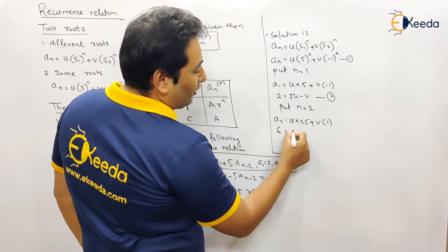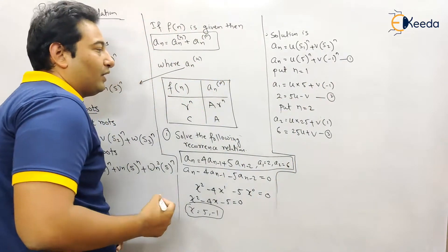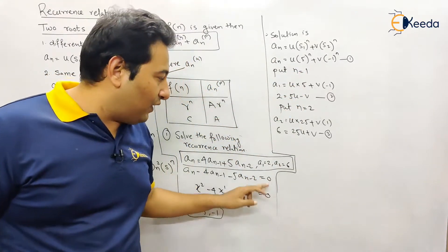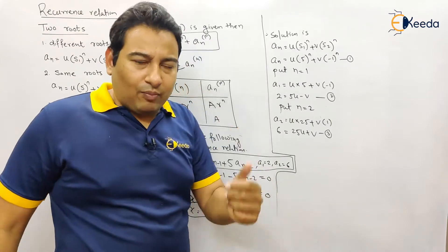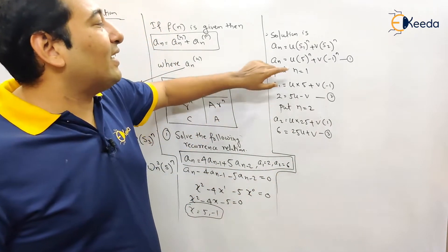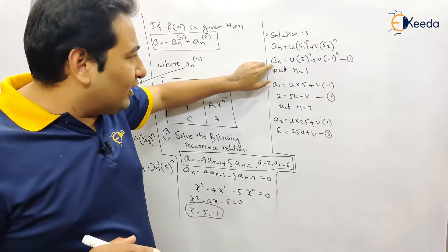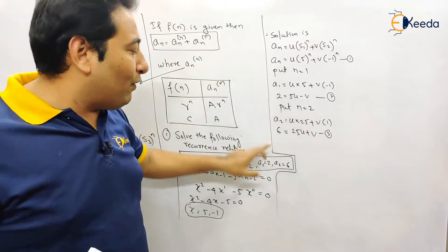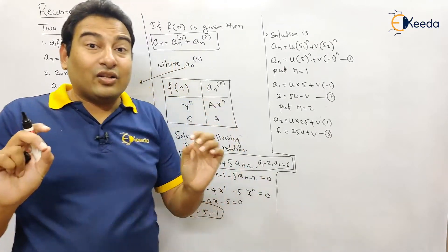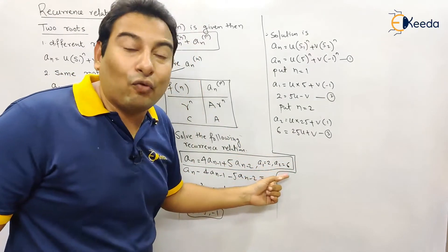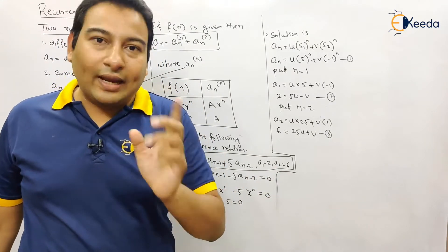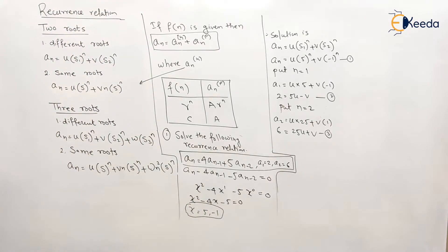Putting n = 2: a2 = u·25 + v·1, and since a2 = 6, we get: 25u + v = 6. This is equation 2. Note: we substitute n = 1 and n = 2 because a1 and a2 are given. If a0 and a1 were given instead, we would substitute n = 0 and n = 1. Solving the two simultaneous equations gives u = 4/15 and v = -2/3.